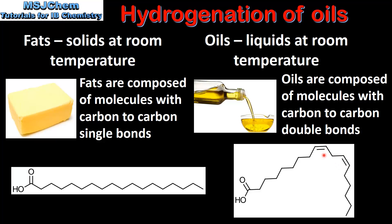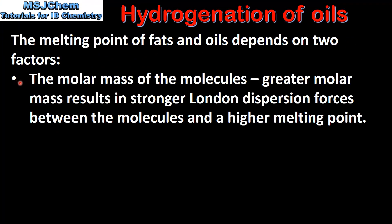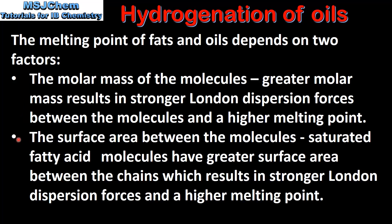The presence of carbon to carbon double bonds has an effect on the melting point of the fatty acid. The melting point of fats and oils depends on two factors. The first factor is the molar mass of the molecules — greater molar mass results in stronger London dispersion forces and a higher melting point. The second factor is the surface area between the molecules. Saturated fatty acid molecules have greater surface area between the chains, which results in stronger London dispersion forces and a higher melting point.